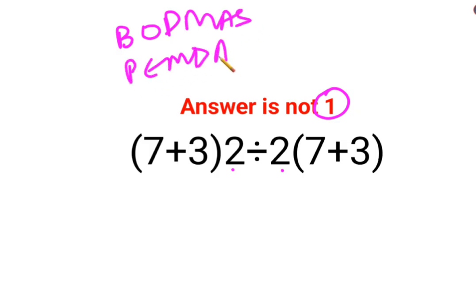In both cases, we do the brackets first. So this becomes 10, this becomes 10. Now there is no sign between this bracket and 2. Here also the same situation. That means it is multiplied and this is also multiplied.